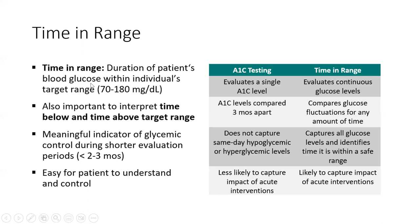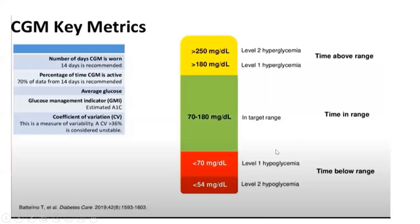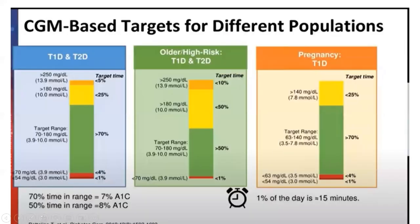For time in range, the target is between 70 to 180 mg/dL. Now let's look at the CGM-based targets for different populations. For a typical Type 1 and Type 2 diabetic patient, the target range of 70–180 mg/dL (3.9–10 mmol/L) should be more than 70% of the time. Level 1 hyperglycemia (above 180 mg/dL) should be less than 25%, and Level 2 hyperglycemia (above 250 mg/dL) should be less than 5%.